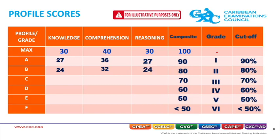For the knowledge profile, profile grade C has a minimum of 70% × 30, equal to 21. In the case of the comprehension profile, profile grade C has a minimum of 70% × 40, equal to 28. In the case of the reasoning profile, profile grade C has a minimum of 70% × 30. Continuing with this logic, we complete the table.